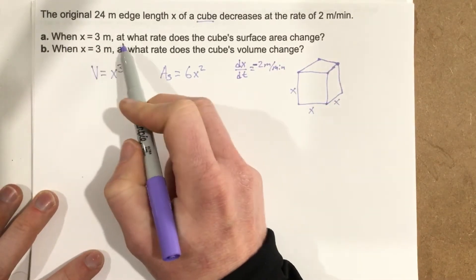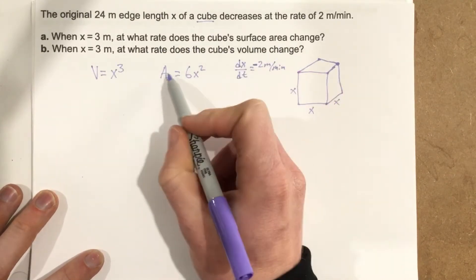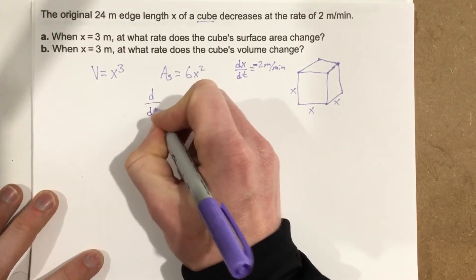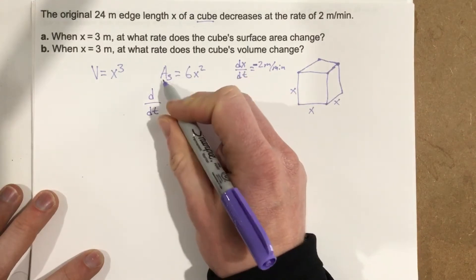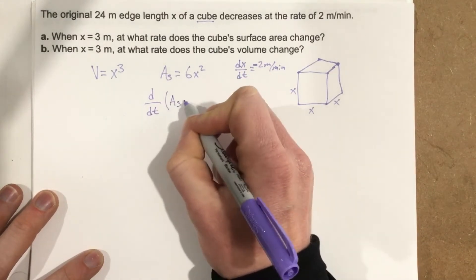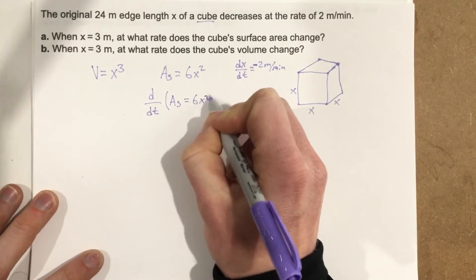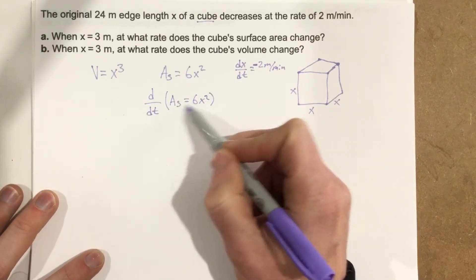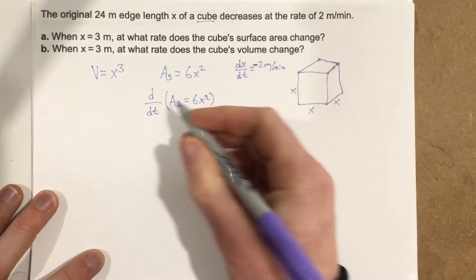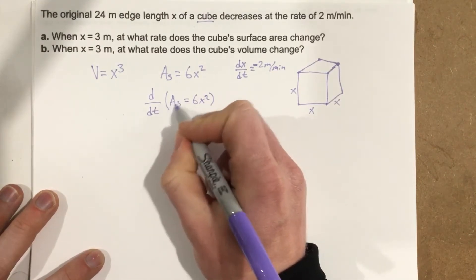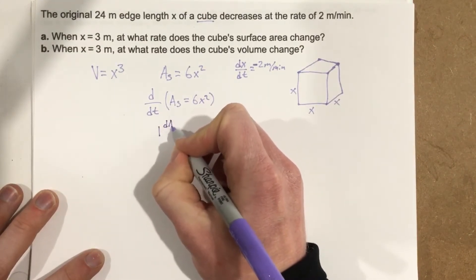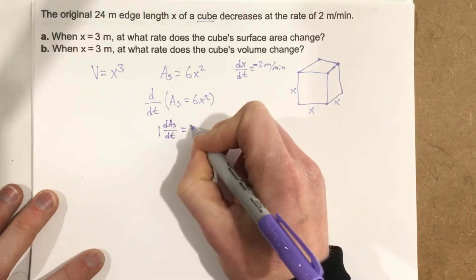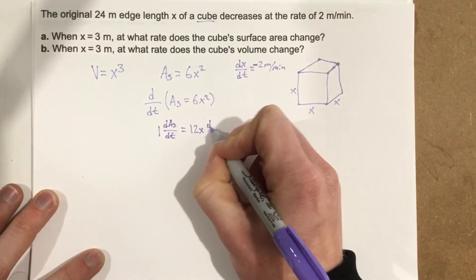When X equals 3, at what rate does the cube's surface area change? So they're looking for DAS over DT. We're going to take the derivative of the surface area function AS equals 6X squared with respect to time, because we want to know the rate of change versus time. Since neither variable is T, we use implicit differentiation. The derivative of AS gives us DAS over DT equals 12X times DX over DT.